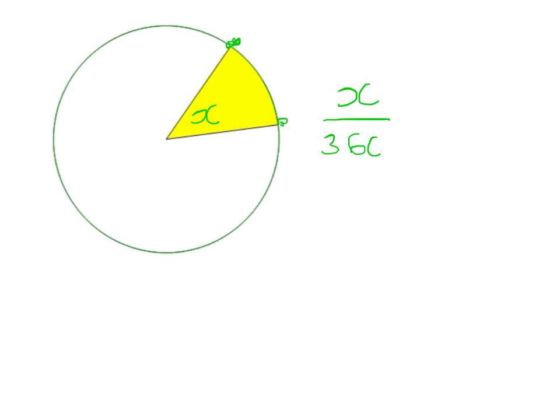For example, if the angle was 180, then we'd have half a circumference. In a general formula, we'll use x to stand for the angle, and then multiply that by the formula for circumference. Now, circumference is 2πr.